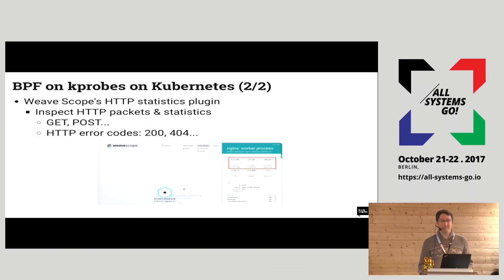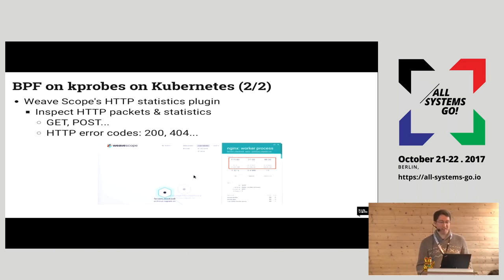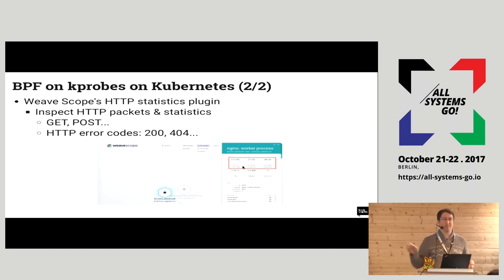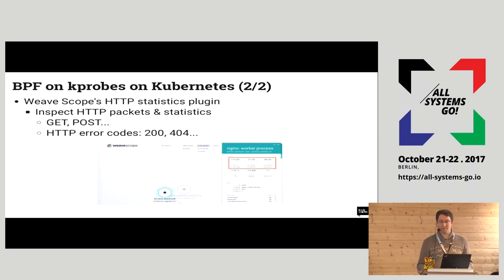Another example of using kprobes with eBPF in Kubernetes, still with Weave Scope, is the HTTP statistics plugin. Weave Scope has a plugin system for additional views on the Kubernetes cluster. This HTTP statistics plugin shows how many HTTP requests there are per second and different kinds of HTTP requests or replies — for example GET, POST, error code 404, etc. In the screenshot you can see there were 115 requests per second, shown as a graph. To do that it installs some kprobes on kernel functions — every time a process sends or receives a packet over a socket, the BPF program is triggered and looks inside the packet to see if it looks like an HTTP request or reply.